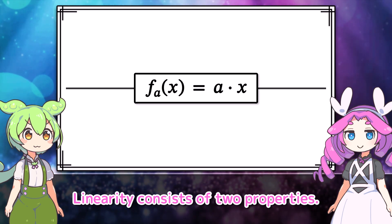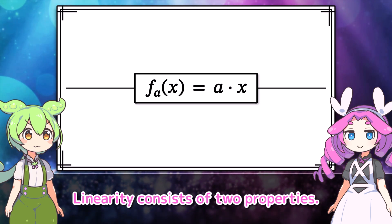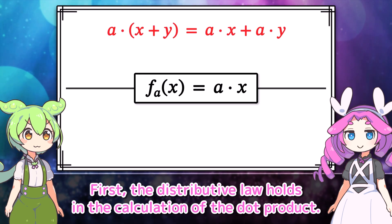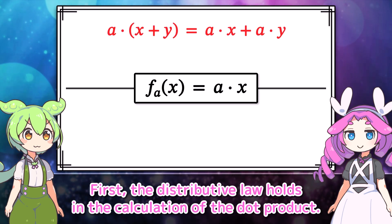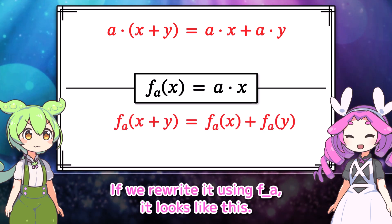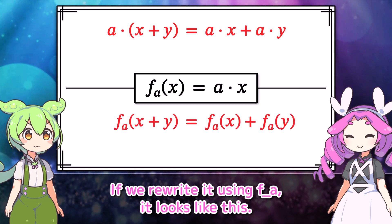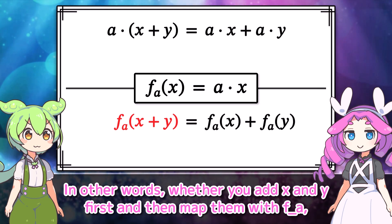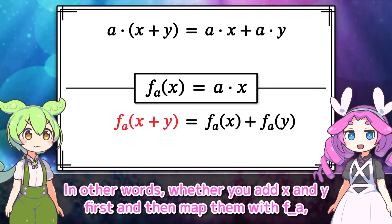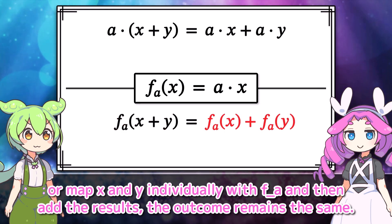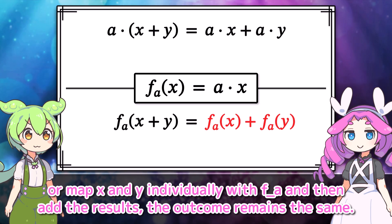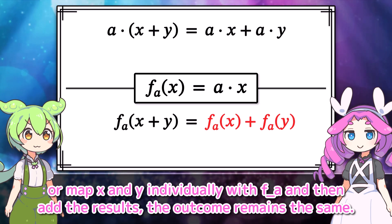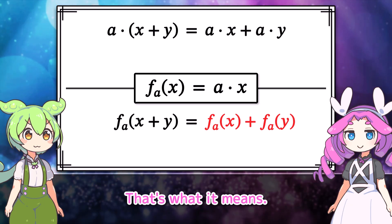The dual space can be defined for a general type of vector space, but for now let's consider the space of numerical vectors of real numbers as an example. The a times function we've been dealing with has a property called linearity. Linearity consists of two properties. First, the distributive law holds in the calculation of the dot product.